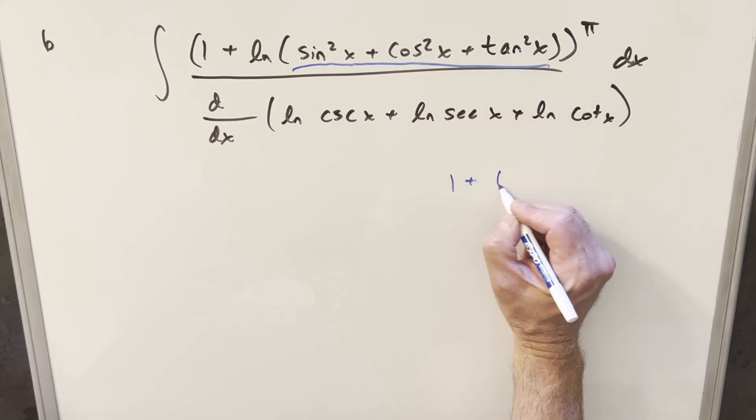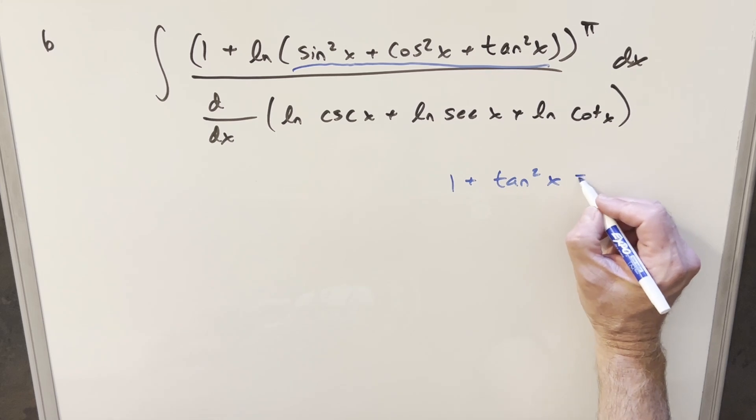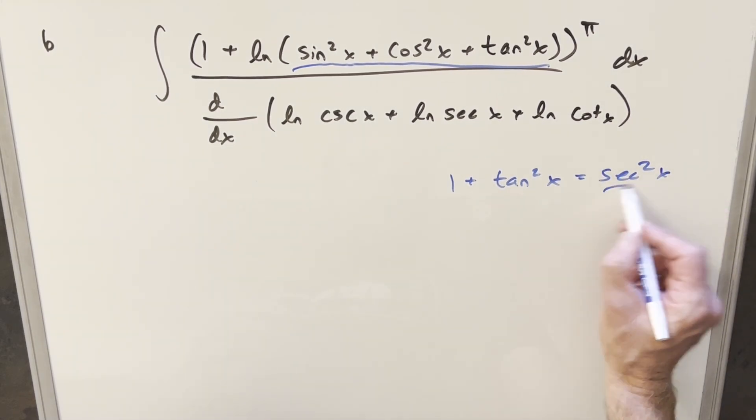So that's going to transform into 1 plus tan squared x. But we have the identity for this. This is the same thing as secant squared x. So what I can do first is we can rewrite the denominator. So first we can rewrite the numerator just using this.